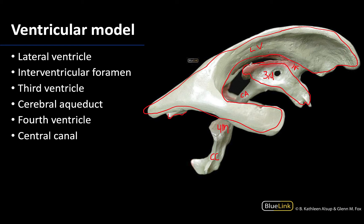These pink portions throughout this model — you can see a little bit here and a little bit in the background — are supposed to represent the choroid plexuses, which are located in the walls of the ventricles. This is where CSF is produced, so that's what the pink is supposed to be representing on this model.